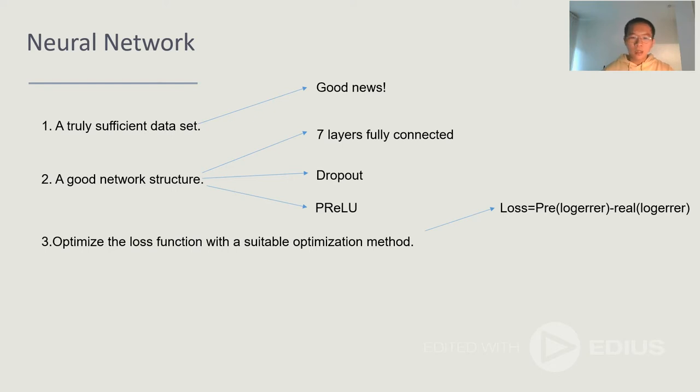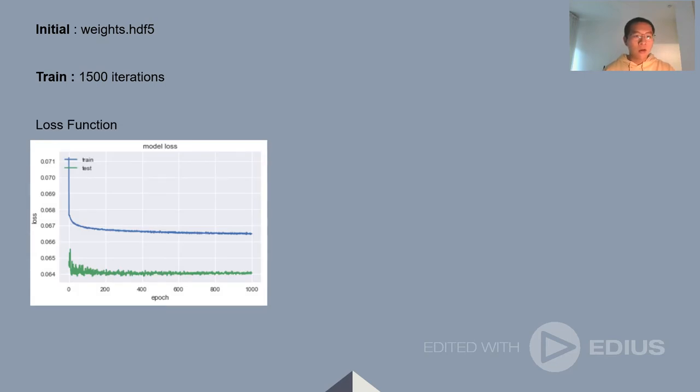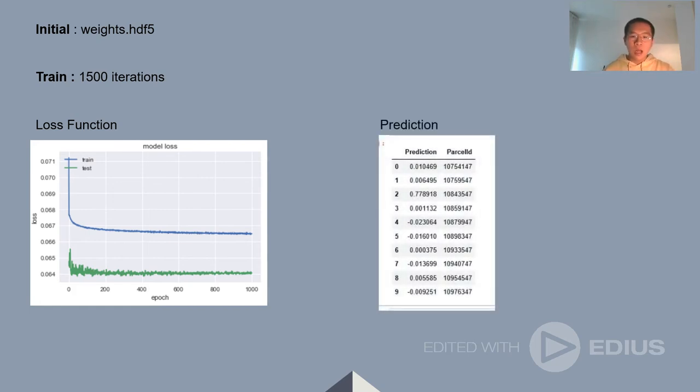And then we define our loss function as the predicted log error minus the real log error. And for training, we use ADAM optimizer. After our model has been built, we assign the initial values to the model and then train it. After 1500 iterations, we get our final model and we draw a curve of our loss function. And from this figure, we can see after 1500 iterations, the loss curve has converged and the loss value is very small. Now, the train results and the test results are very good. And finally, we use our model to make the prediction. And this is some of our results.